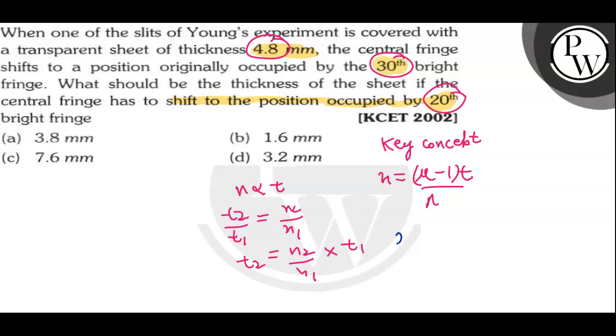So when we solve it, what value we got? It is equal to 3.2 millimeter, which means option d is the correct answer.